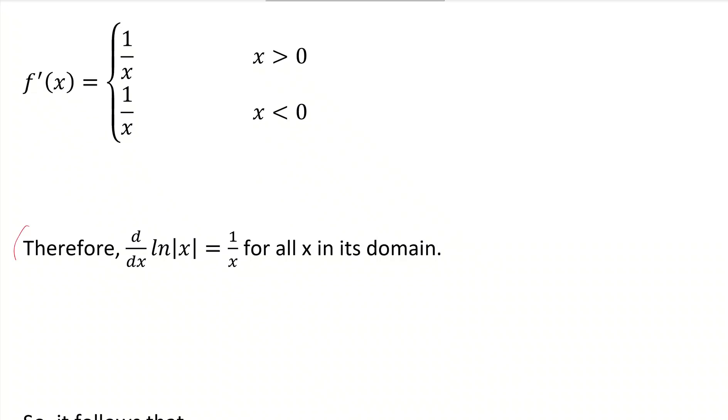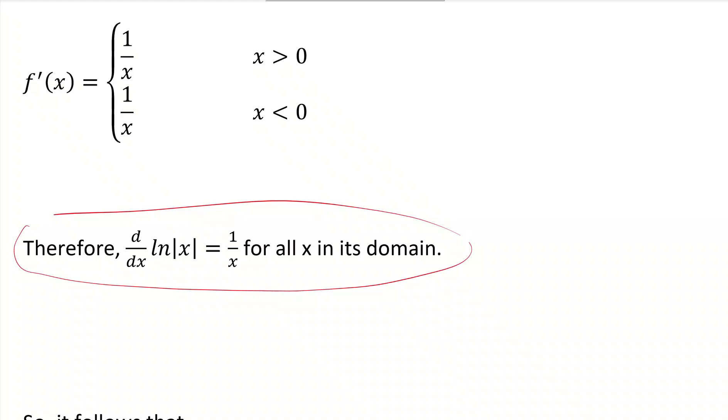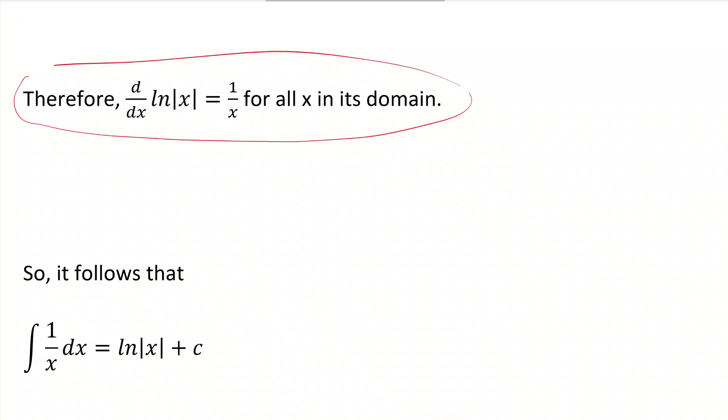So what we have just shown is that the derivative of ln of absolute value of X is equal to 1 over X. And so it follows that if we integrate 1 over X dx, the antiderivative should be ln of absolute value of X plus C, depending on the initial condition. Let's take that as truth for this lesson.